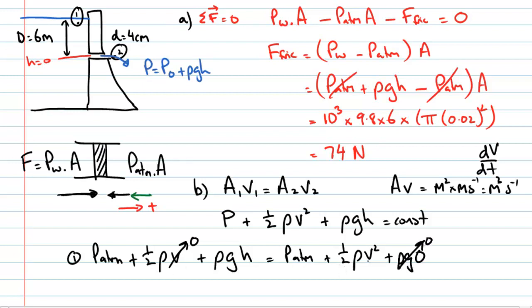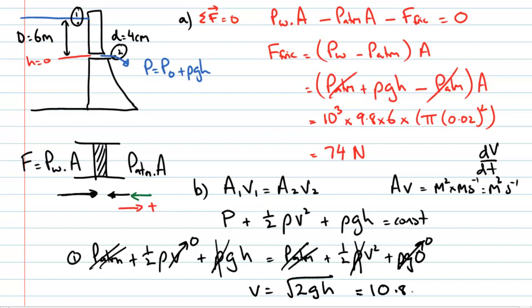Equating the two Bernoulli expressions, atmospheric pressure cancels from both sides, and density cancels as well. Solving for velocity: v = √(2gh) = √(2 × 9.8 × 6), which gives 10.8 metres per second. This is the same velocity an object would have after falling freely from that height.